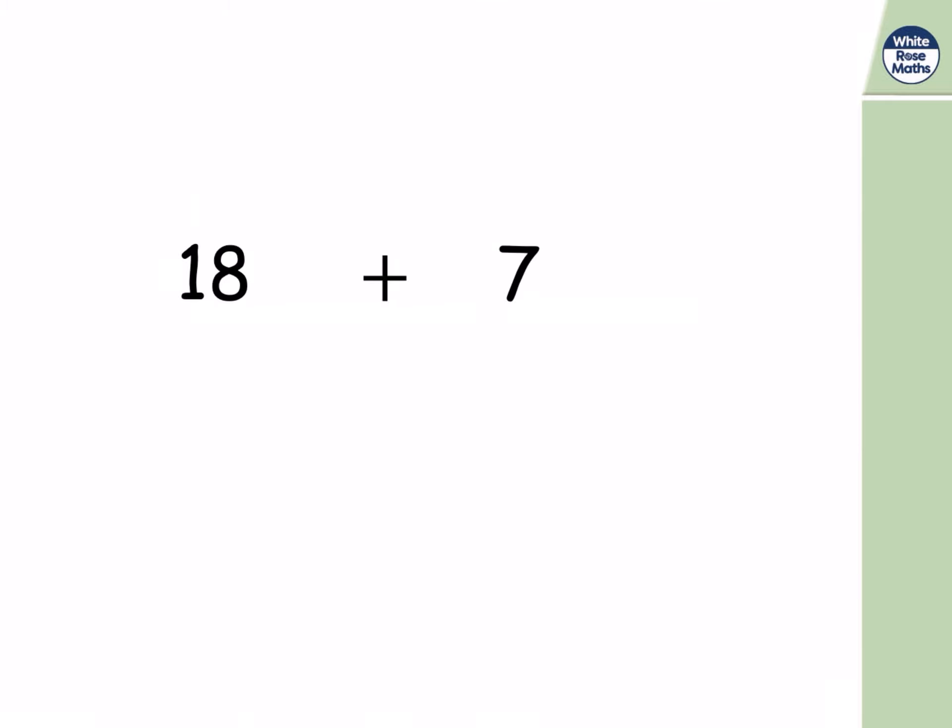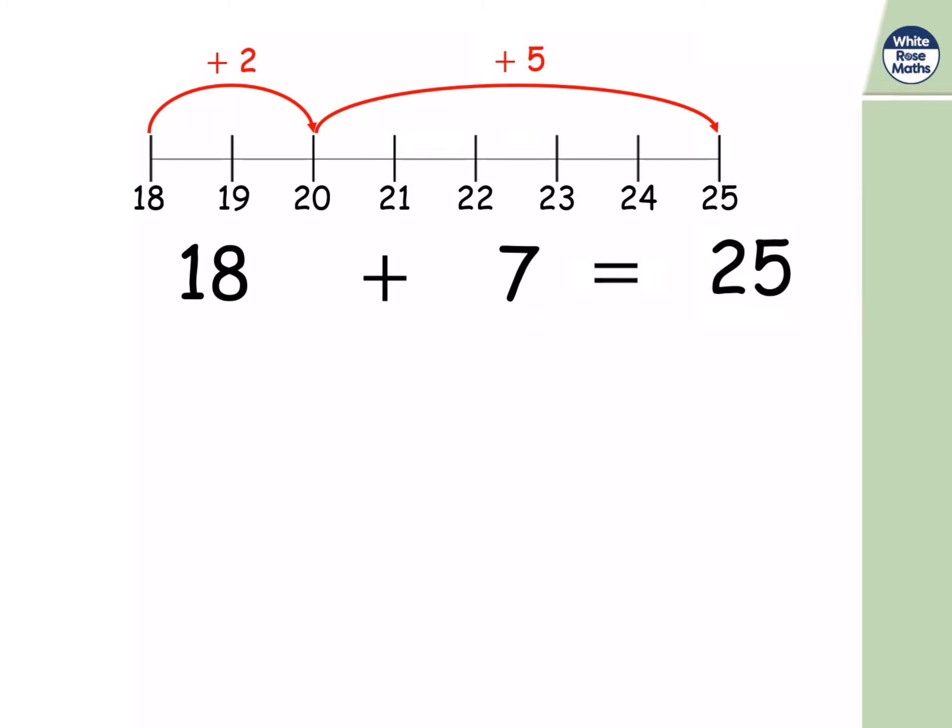Eighteen plus seven this time. I'm going to start with the number line again. And I'm going to jump to that next ten. So eighteen to twenty is a jump of two. And then I want to jump seven altogether. So my second jump is a jump of five. Two plus five making seven altogether. And I've landed on twenty-five. Eighteen plus seven is equal to twenty-five.